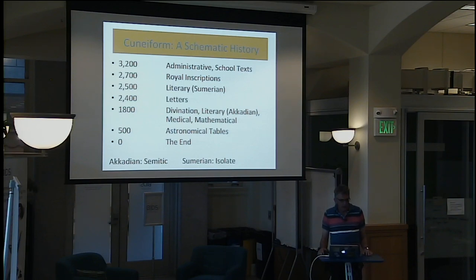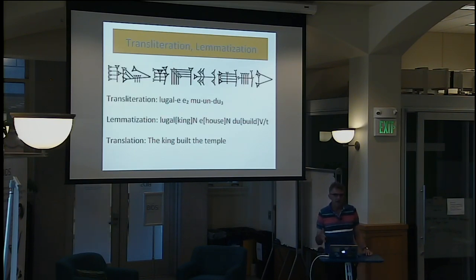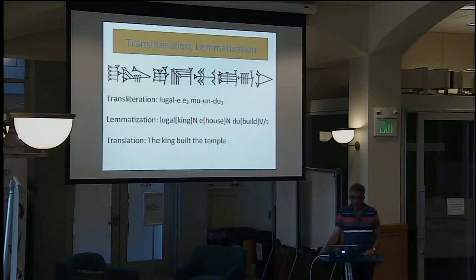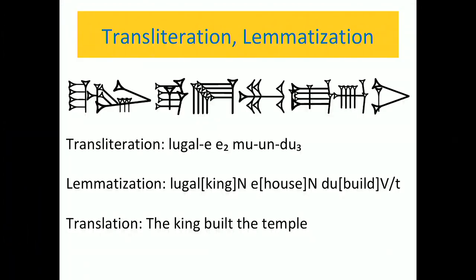I will be using concepts like transliteration and lemmatization, and in order to make clear what they mean, I show you here four different representations of the same simple Sumerian sentence. The first representation is in cuneiform. The second is a sign-by-sign transliteration: lugal e2 mu-un-du3. The third is the same sentence in lemmatization — lugal is 'king,' a noun; e2 is 'house,' also a noun; du3 is 'to build,' a verb. As you can see, morphology is omitted in lemmatization and what is added is a very basic translation of each word. Finally, a translation in English: 'the king built the temple.'